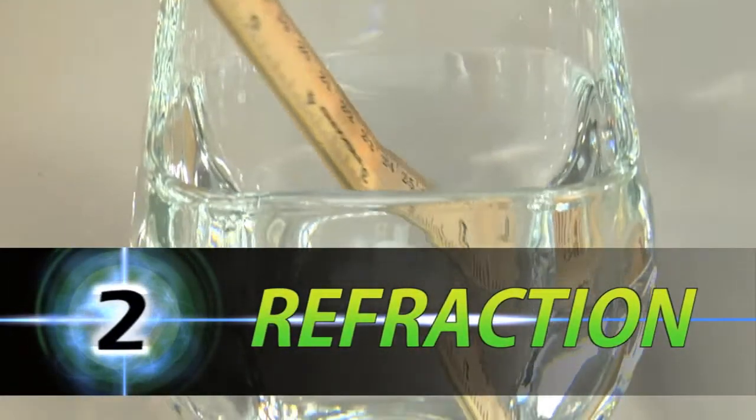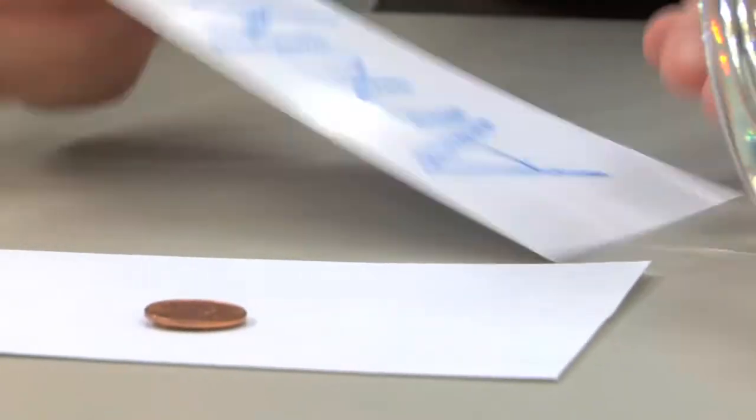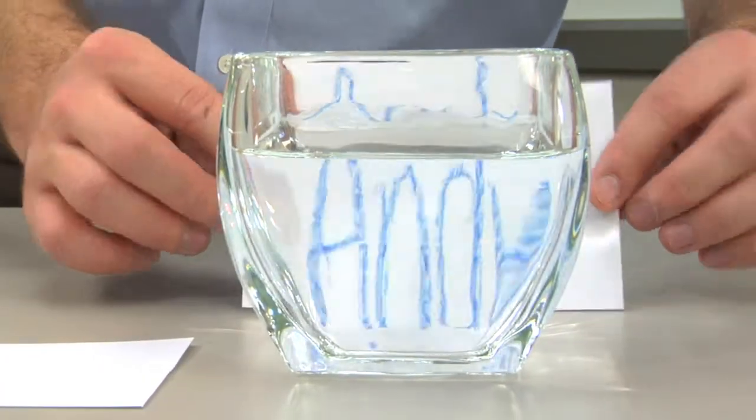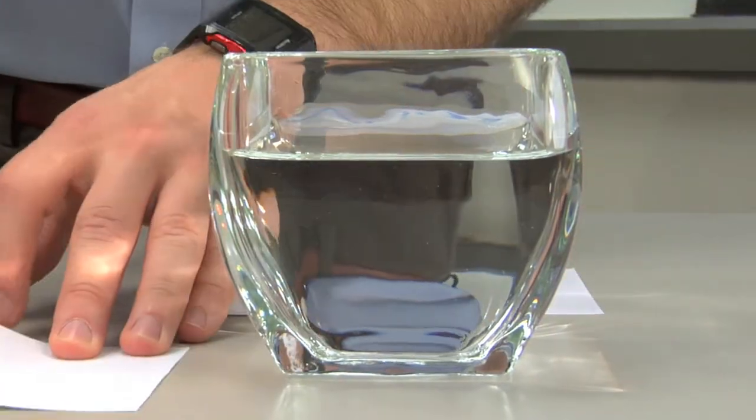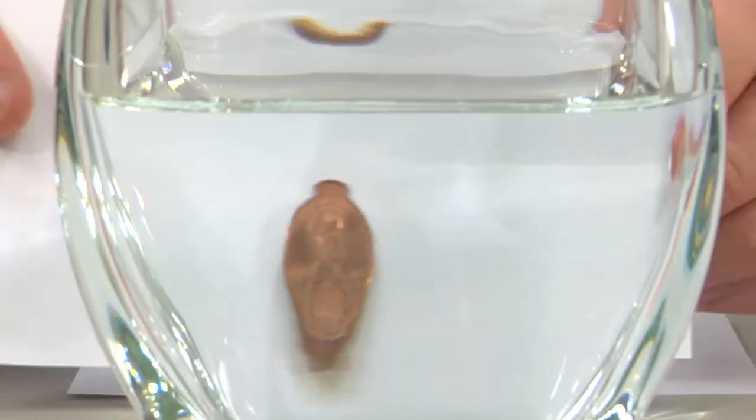Refraction Using Water and Lenses. Instruct each student to write his or her name on an index card and watch how the letters warp when viewed through water. They can also use a penny and observe how its appearance alters.